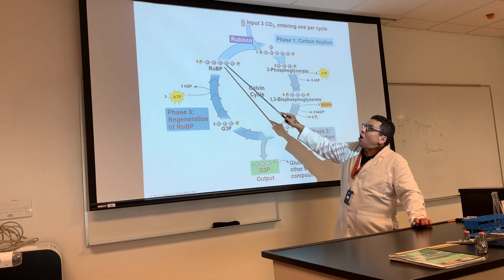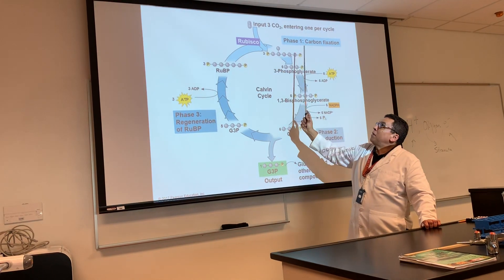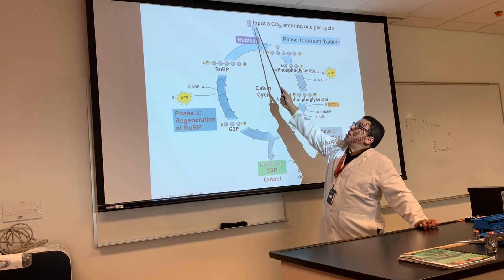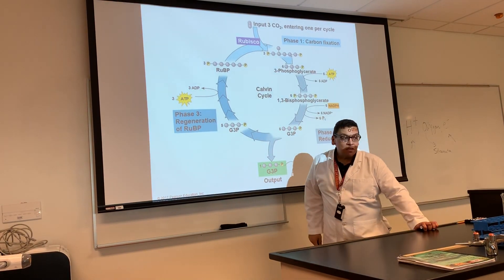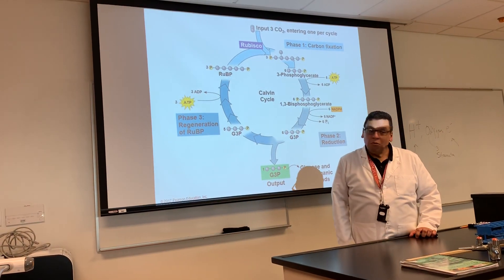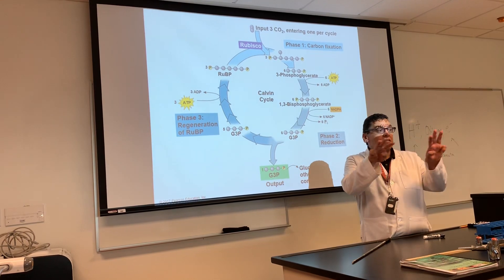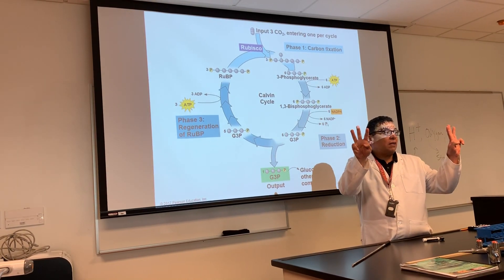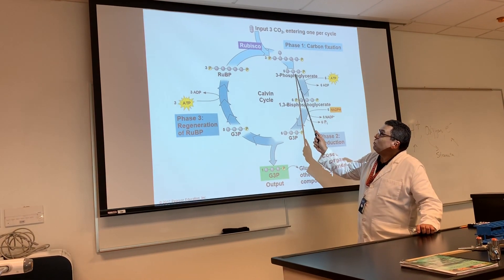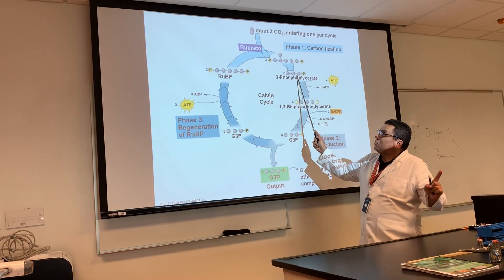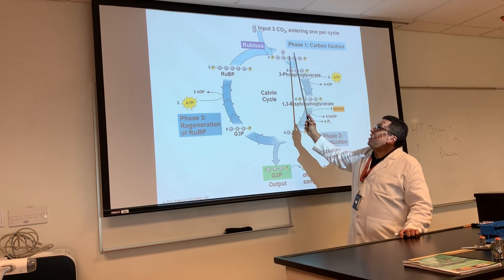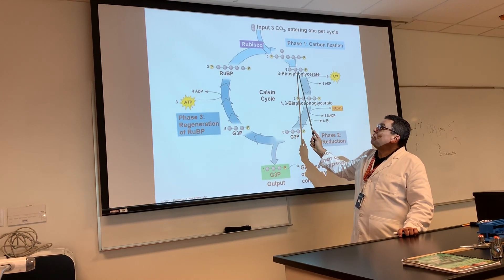What happens now is RuBP picks up a carbon and becomes a six-carbon molecule — five carbons plus one makes six carbons. The interesting thing about this molecule is if you try to catch it, you won't, because as soon as it's made, it breaks into two molecules right away. So as soon as you make it, it breaks in half.